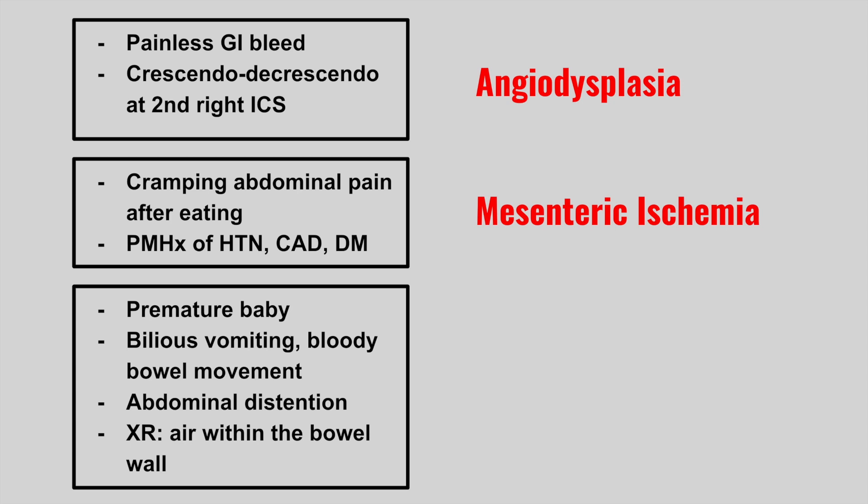The next patient is a premature baby with bilious vomiting, bloody bowel movements, abdominal distension, and an x-ray showing air within the bowel wall — this is necrotizing enterocolitis. The air within the bowel wall is called pneumatosis intestinalis. Anytime you see a premature baby with bloody bowel movements, think about necrotizing enterocolitis.